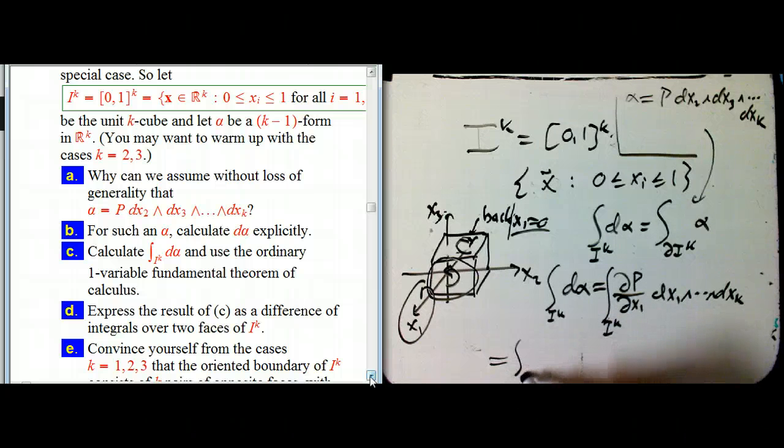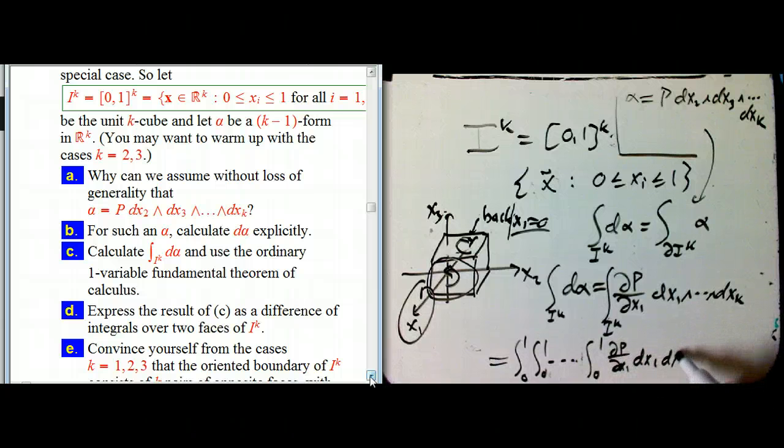A lot of this is just sort of follow your nose, make things more explicit. That's going to be integral zero to one, zero to one, dot dot dot, integral zero to one, dp/dx_1 dx_1 dx_2, and I'm just going to drop the wedges because they're all in the right order. Don't need a minus sign, and that's how we integrate k forms in R^k. We just drop the wedges.